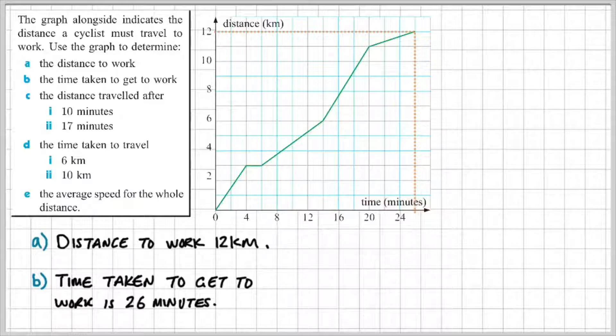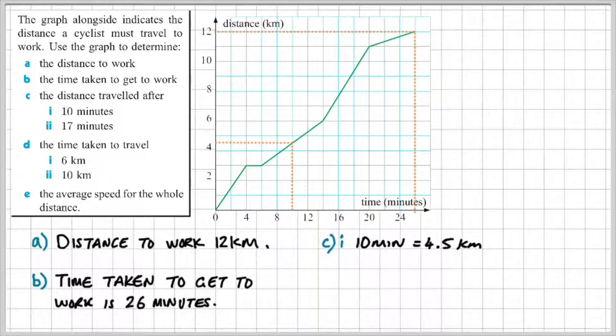So there's two parts to question C, and it says the distance travelled after 10 minutes and 17 minutes. So the units along the x-axis measure the time in minutes. So if we find 10 minutes here, and we go up to the line and across, we can see that we're travelling about four and a half kilometres. So therefore, after 10 minutes, we've travelled 4.5 kilometres.